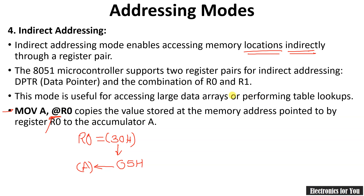Two main registers R0 and R1 are only used for indirect addressing, or another option is the data pointer (DPTR), because the data pointer is also used to store sequential data. This is a very important addressing mode when we want to save memory space or access continuous data. If you want to access a stack, then this addressing mode is very important.